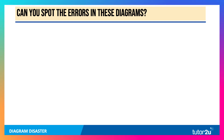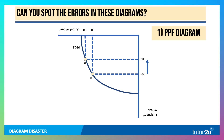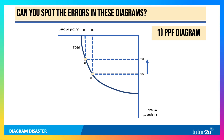Here's your ten diagram disasters. Here's the first one: Production Possibility Frontier Diagram, the output of wheat, the output of beef. Can you spot the error in this diagram? The answer is actually quite straightforward — this diagram is upside down. That is the error. I've drawn it upside down. Now that's quite an easy one to start with.